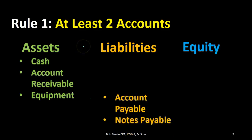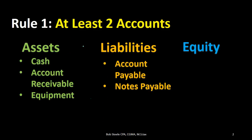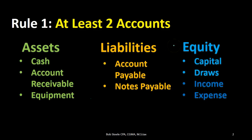Then we have liabilities — things like accounts payable and notes payable. Anything that says payable is basically going to be a liability. We'll start with accounts payable and then get to more liabilities when we reach the accrual process. Within the equity section we have capital and draws, and then the entire income statement — meaning income and expenses. The entire income section will be in the equity section of the accounting equation, and we'll talk more about why that is in a later lecture.